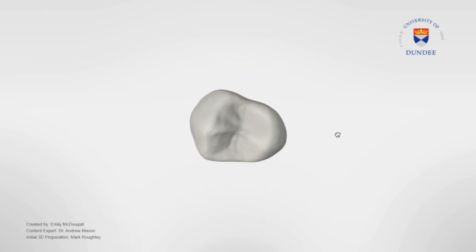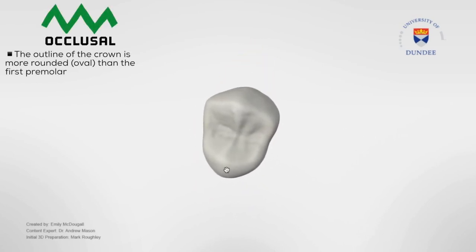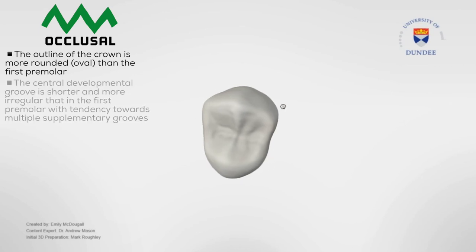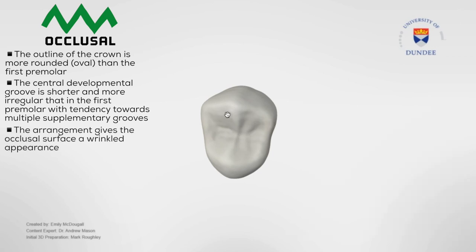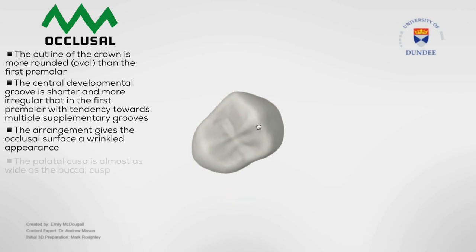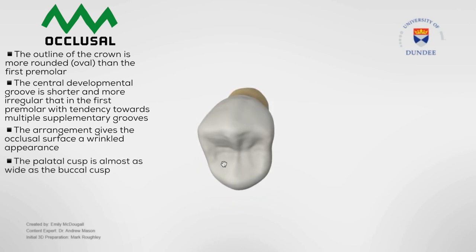Looking at the tooth from the occlusal aspect, we can observe that the outline of the crown is more rounded and oval than the first premolar. The central developmental groove in this tooth is shorter and more irregular than in the first premolar, with a tendency towards multiple supplementary grooves. This arrangement gives the occlusal surface a wrinkled appearance. Finally, the palatal cusp is almost as wide as the buccal cusp.